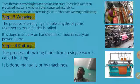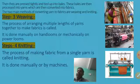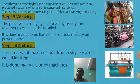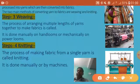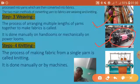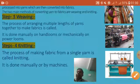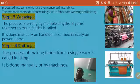Step three is weaving. Weaving is the process of arranging multiple lengths of yarn and interlacing them together using machines called power looms or by doing it manually. By hand, production is less, but power loom production is large. Step four is knitting, which is the process of making fabric from a single yarn.